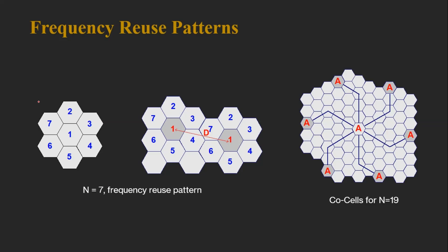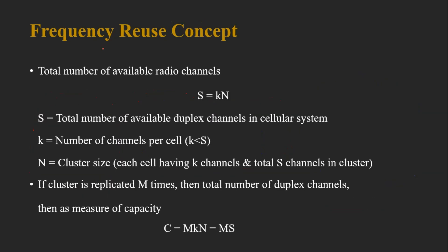Here is an example of a frequency reuse pattern with N=7: seven cells repeat over the region, and co-channel cells can be identified using the i-j method. For N=19, starting from the center cell and moving three steps then two steps in the appropriate directions locates the co-channel cell. Similarly, co-cells for all other cluster configurations can be found using this approach.